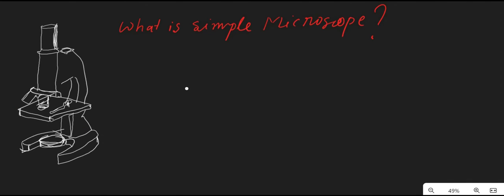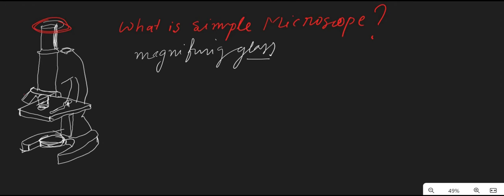A simple microscope is a type of magnifying glass which has a double convex lens with a short focal length. You can see here there are two lenses — a double convex lens. Examples of simple microscopes we use in our daily life include instruments like a hand lens and a reading lens.